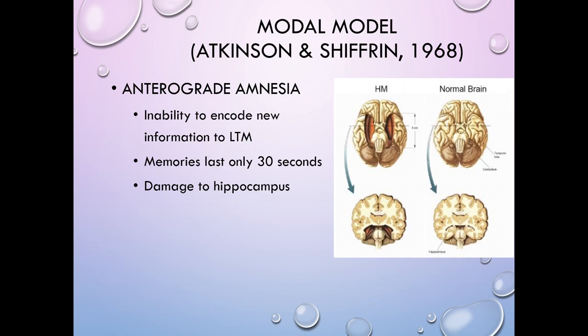HM became a classic case study for psychologists to understand the impact of hippocampal loss on memory and awareness. He had difficulty learning new facts — like who the current president was — for his entire life. Over the course of his life he was able to learn a couple of new things with very heavy repetition, but these tended to be lower-level items. Had only one hippocampus been damaged rather than both, he probably wouldn't have had this problem.